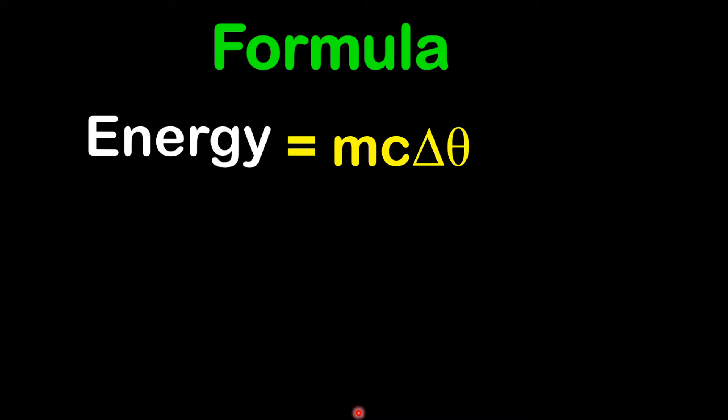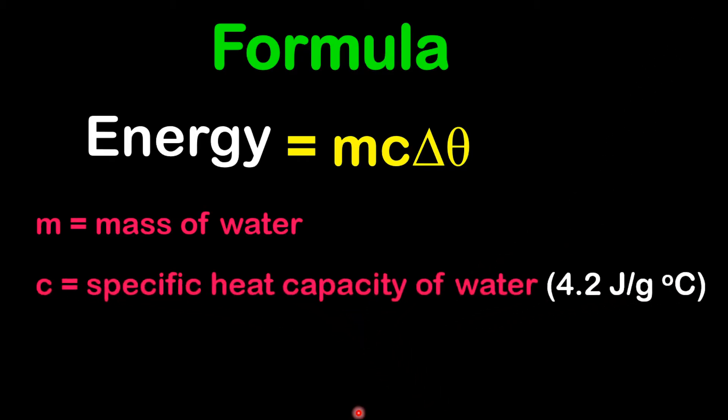The formula to calculate energy is MC delta theta. M is for the mass of water. C is the specific heat capacity of water, and it is given as 4.2 joules per gram per degree Celsius. Delta theta represents the change in temperature.